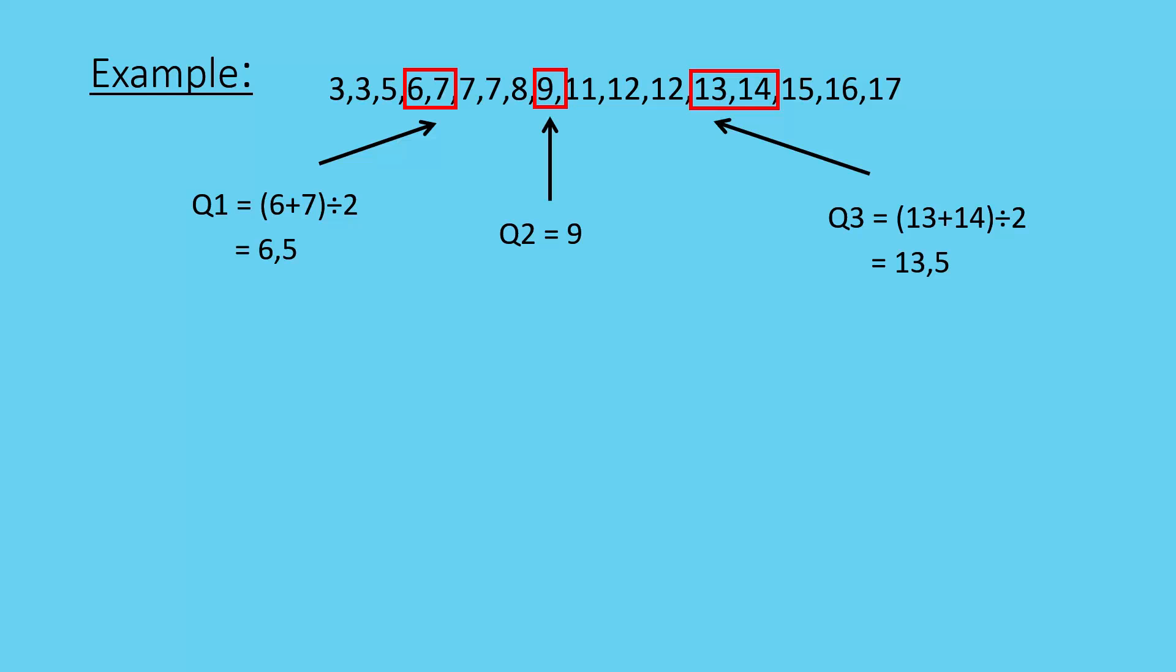My upper quartile has 25% of, if these were marks in a test, 25% of the learners got marks above 13.5, and 75% of the learners got below 13.5.